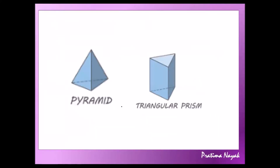Now let me explain the basic difference again. This is a triangular pyramid and this figure is a triangular prism. Here both bases are triangles, but in the prism the sides are rectangles, whereas in the pyramid the sides are all triangles and they meet at a point — the apex.